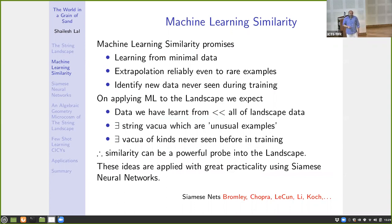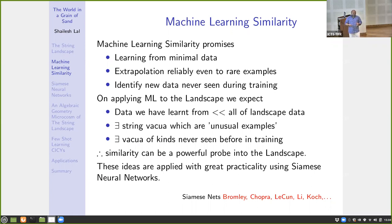To summarize: machine learning similarity promises that you should be able to learn from very minimal data and extrapolate reliably even to unusual examples — like ostriches from sparrows — and even to examples never seen during training, like badgers. Because in landscape exploration the data we've learned from is much less than the possible data, there will be unusual examples and things never seen before. One of the most practical implementations is Siamese neural networks.